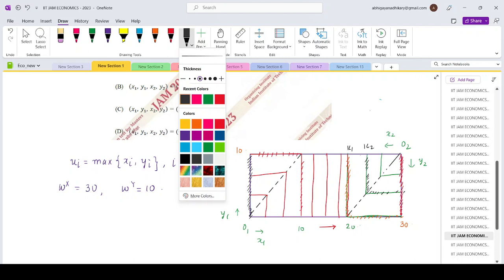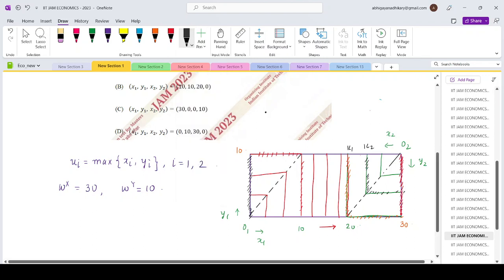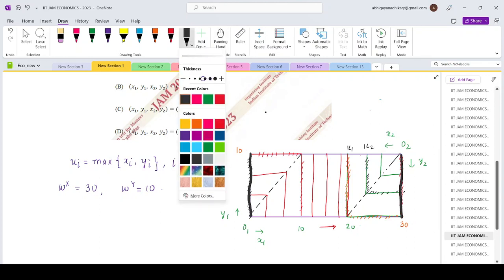So it is essentially the left and the right boundaries of the Edgeworth box which comprises my contract curve.